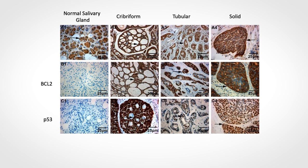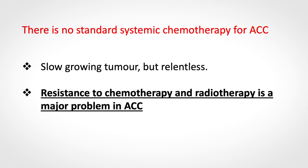This makes a difference in terms of disease outcome: the cribriform and tubular types are more benign compared to solid ACC, which is more aggressive. There is no standard systemic chemotherapy for ACC. It is a slow-growing tumor but ironically responds less to chemo- and radiotherapy, making resistance a major problem and the reason we are doing this research.